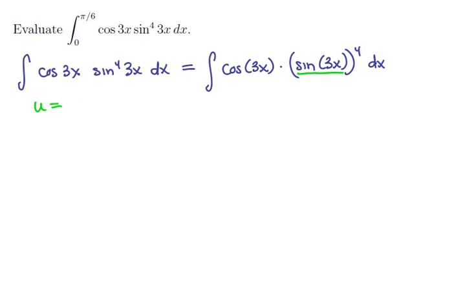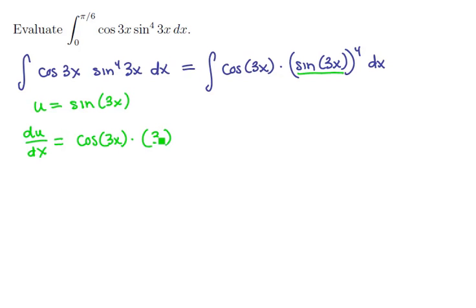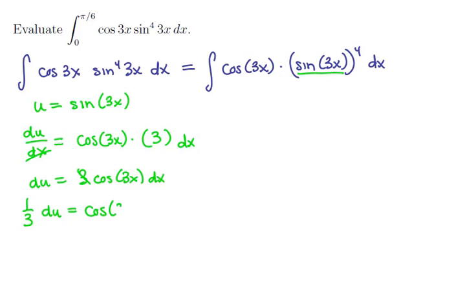Notice that the largest thing in parentheses is the sine of 3x expression, so we're going to use that. Let u = sin(3x). Now let's differentiate: the derivative of sine of 3x is cosine of 3x times 3. Multiplying both sides by dx gives du = 3·cos(3x) dx. Dividing both sides by 3, we get (1/3) du = cos(3x) dx. This is the differential we need to fit.